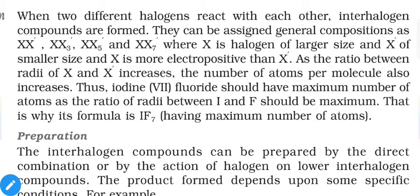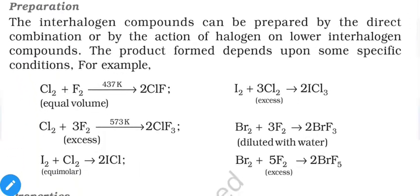As the ratio between the radii of X and X' increases, the number of atoms per molecule also increases. With the largest size difference — iodine and fluorine — we can reach XX'7, giving us IF7, which contains the maximum number of atoms in an interhalogen compound.